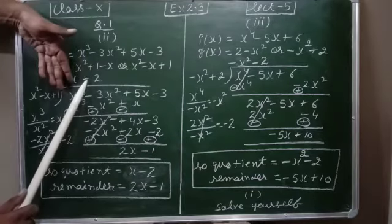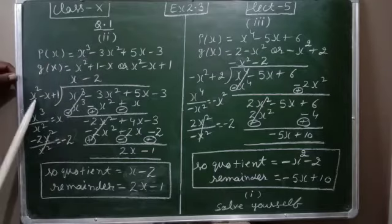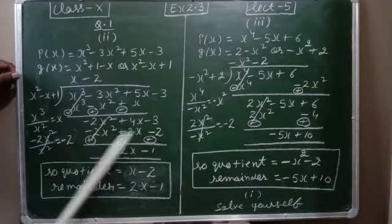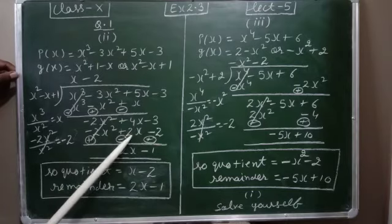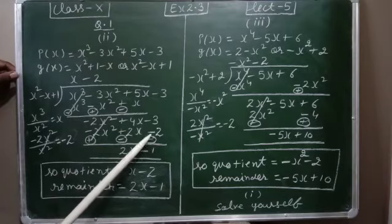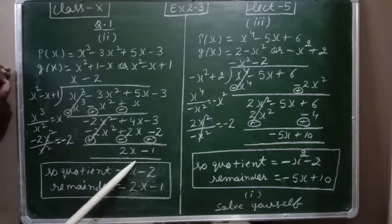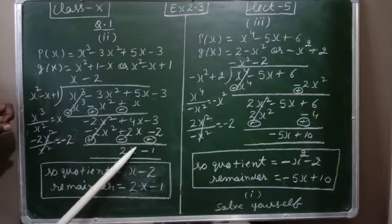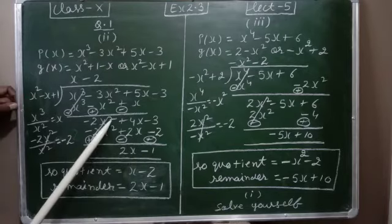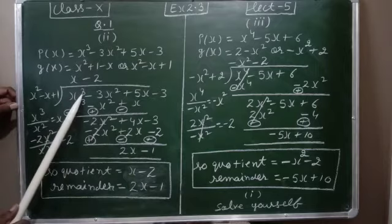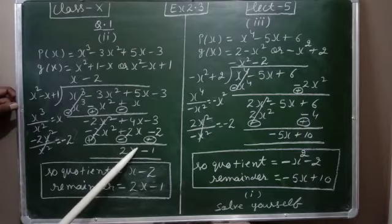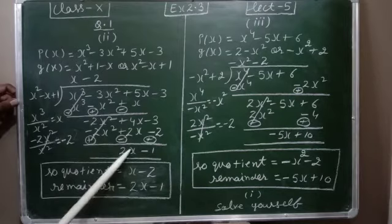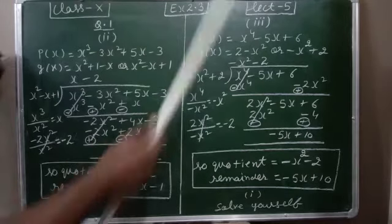Now we multiply minus 2 by all three terms: minus 2 times x² is minus 2x²; minus 2 times minus x is plus 2x; minus 2 times 1 is minus 2. We change the sign. After cancellation the remainder is 2x minus 1. We cannot divide further because the degree of the remainder is less than the degree of the divisor. So quotient is x minus 2 and remainder is 2x minus 2. For the third part similarly, and the first part you will solve yourself as it is a direct division — both P(x) and G(x) are already in standard form.